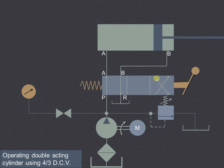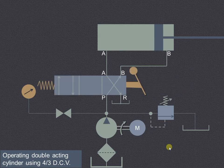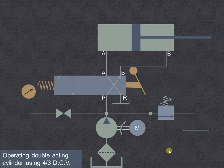When we operate the lever to enter right envelope mode, the fluid from port P will flow into port B, causing the retraction of the piston. In this way we can operate a double acting cylinder using a 4 by 3 direction control valve.